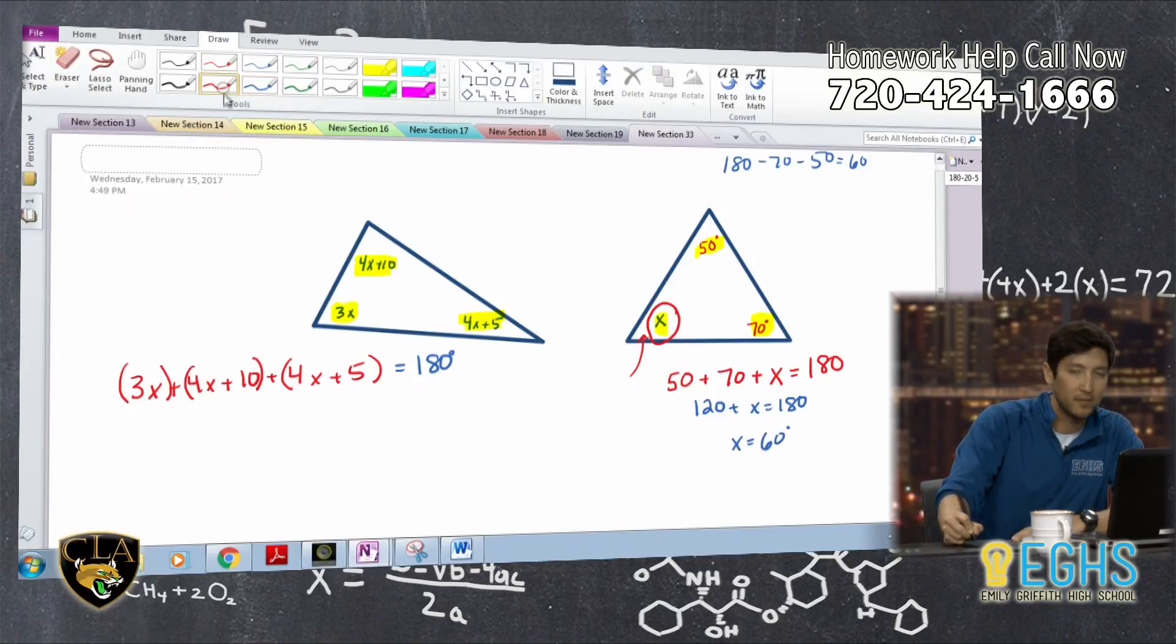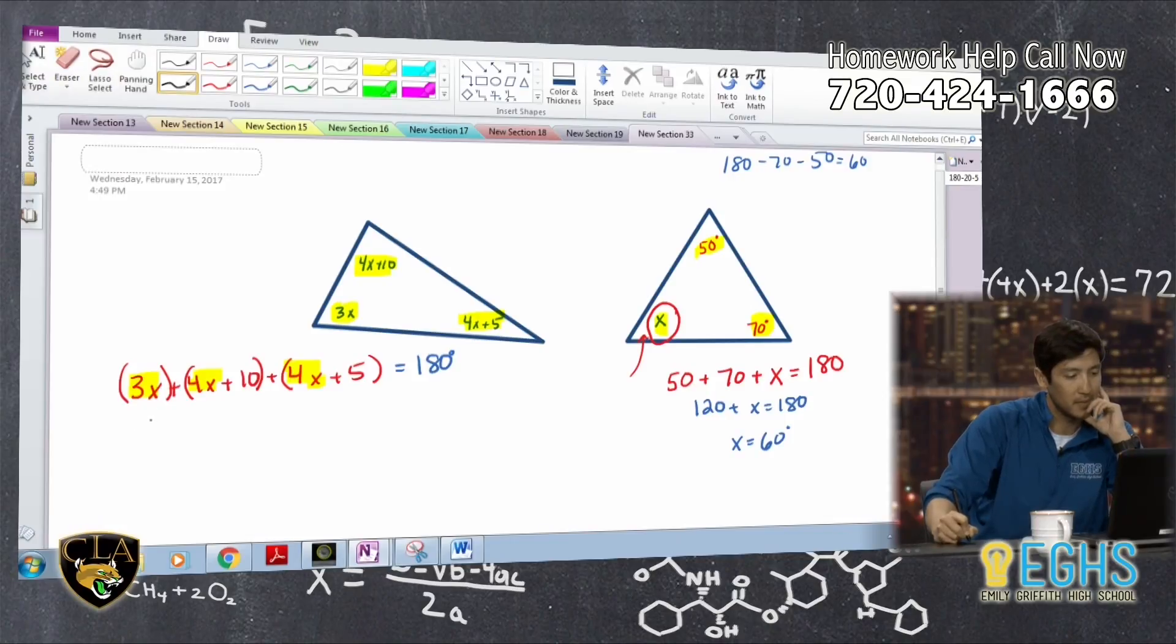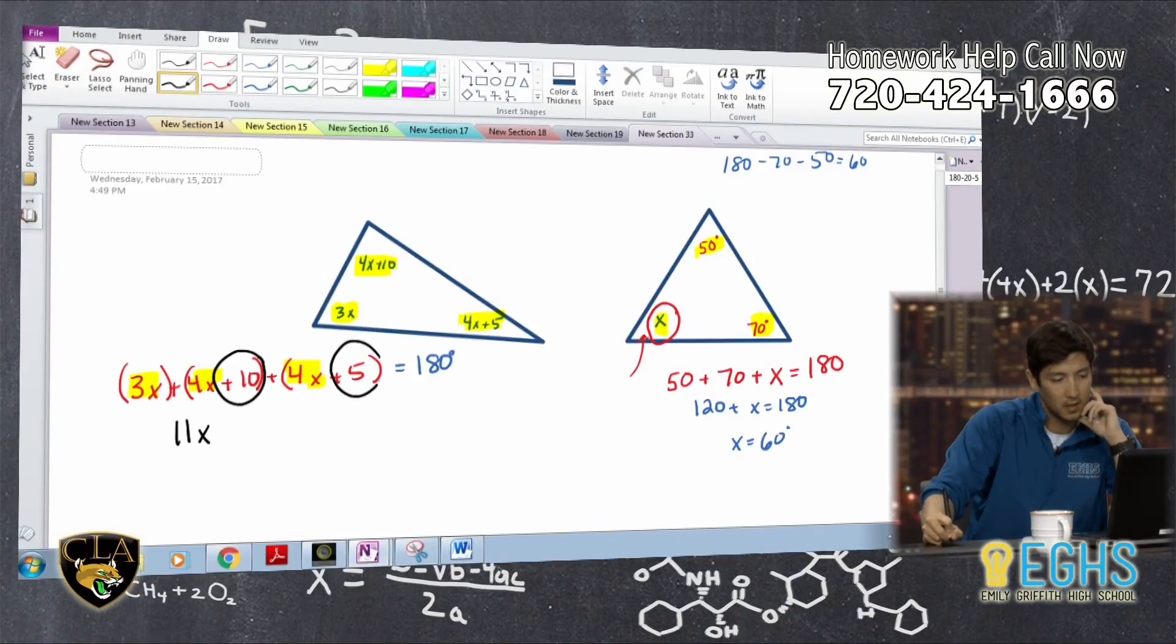So from here, we just have an algebraic expression that we need to simplify and then solve. So we have 3X, we have 4X, and we have 4X. All we're going to do is add those up, and I get 7X, I get 11X plus, and then I'm going to combine these other like terms, plus 15 equals 180 degrees.